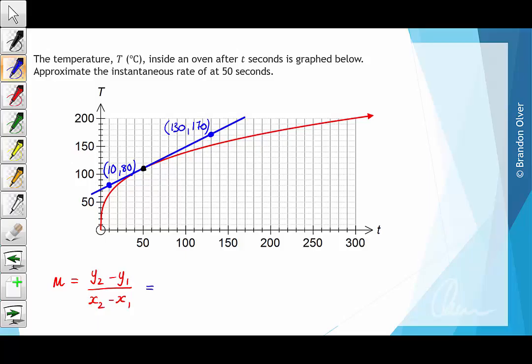So putting our points in, we have y2 is 170 subtract 80, and then x2 is 130 subtract x1, which is 10. So on the top line, if we evaluate that, we end up with 90, and the bottom line is 120.